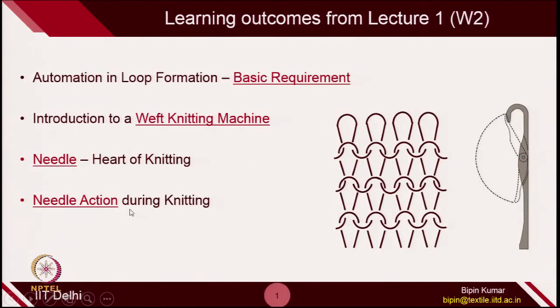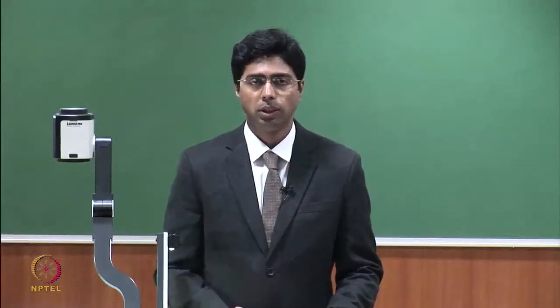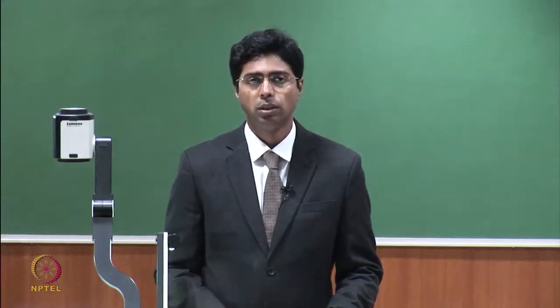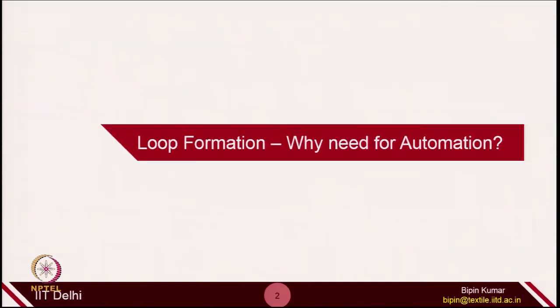Now comes today's lecture. What we are going to learn in today's class: first, we want to learn about automation — why there is a need for automation and how we can automate the process of hand knitting. I am going to introduce you to the basic weft knitting machines which are widely used across the world. We are also going to learn about the most important element on a knitting machine, which is the needle. The needle is called the heart of knitting. I will give more emphasis on understanding the needle functions and the actions during loop formation inside the knit structure.